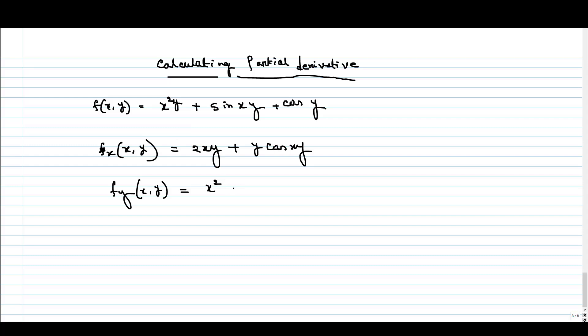So the first term will be x square and for the second term, again x is constant. So x will come up and it will be cos of xy and for the last term now cos y, now it is a variable, so we will get minus sin of y.